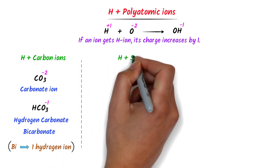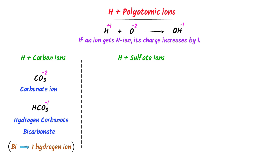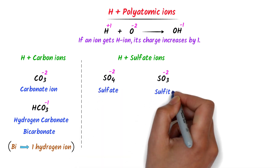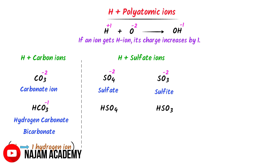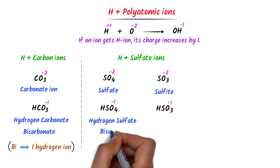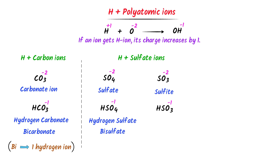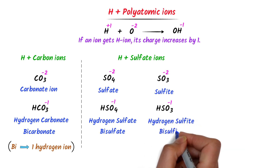Consider hydrogen plus sulfate family. Sulfate ion starts from SO4 and sulfite from SO3, both carry negative 2 charge. Adding a hydrogen ion to each increases the charge by 1, giving negative 1 for both. The name of the first becomes hydrogen sulfate or bisulfate. The name of the second becomes hydrogen sulfite or bisulfite.